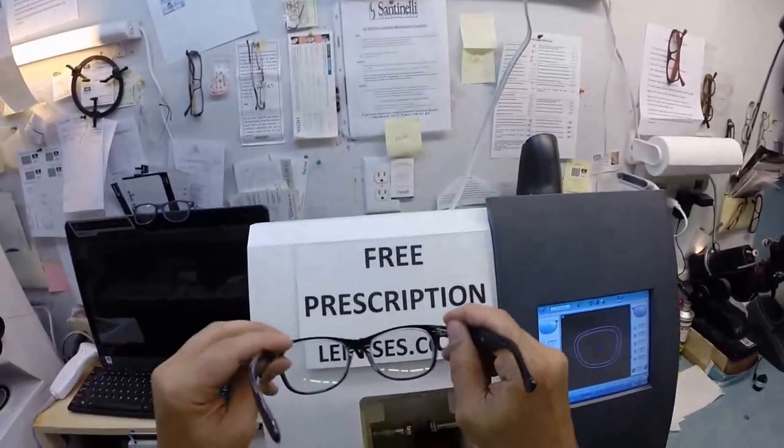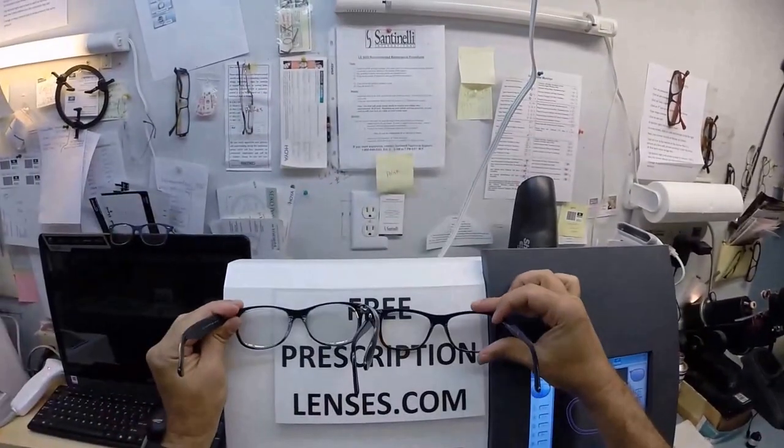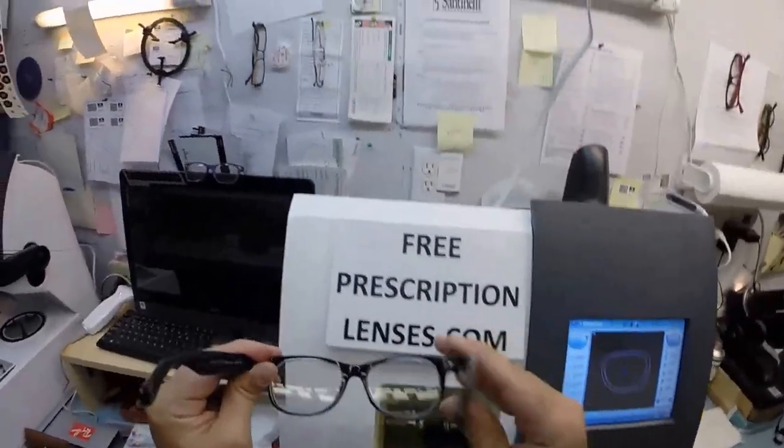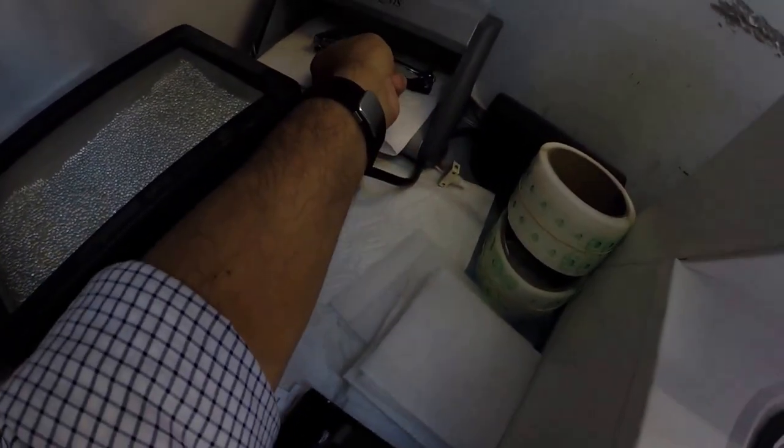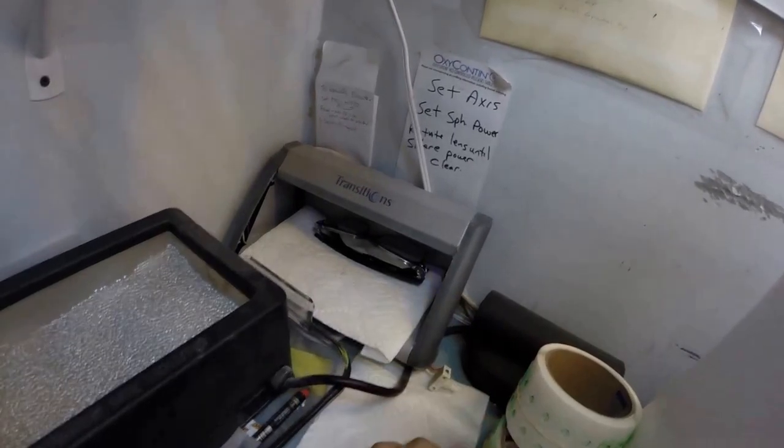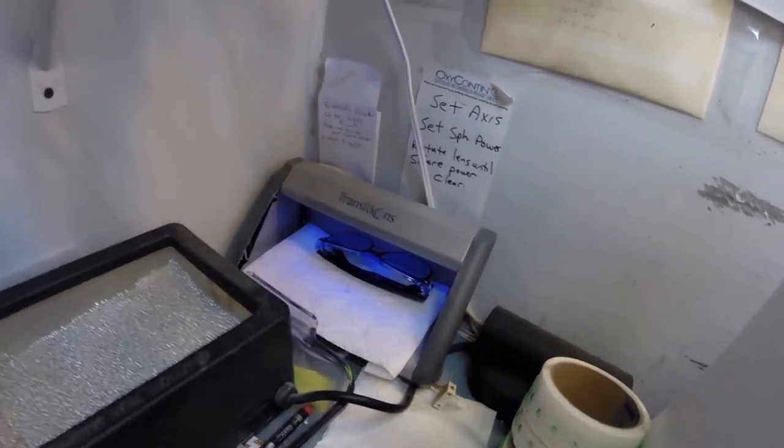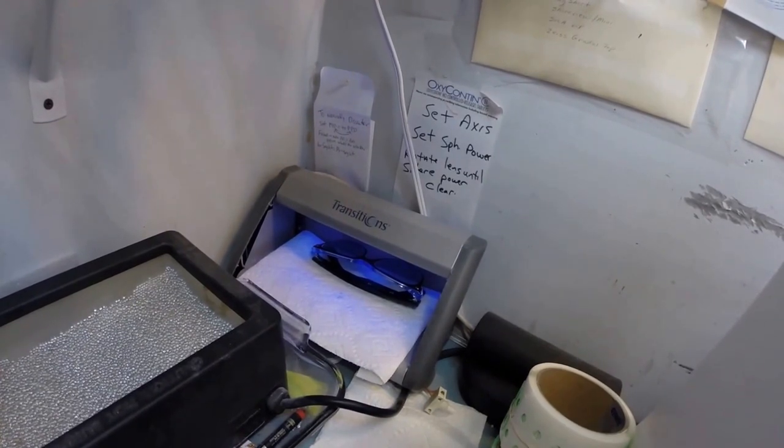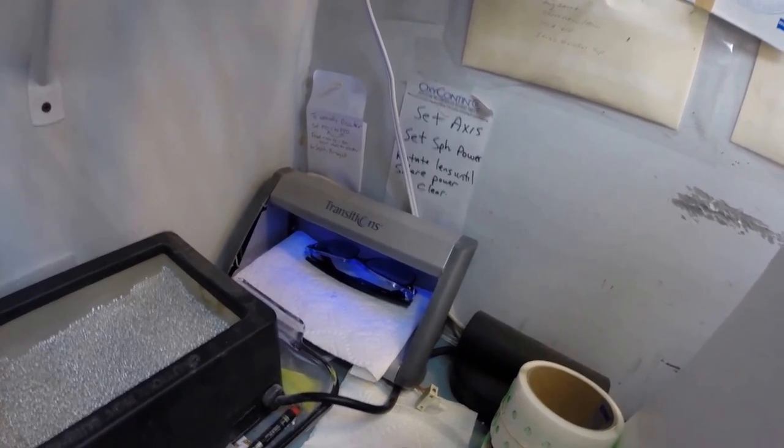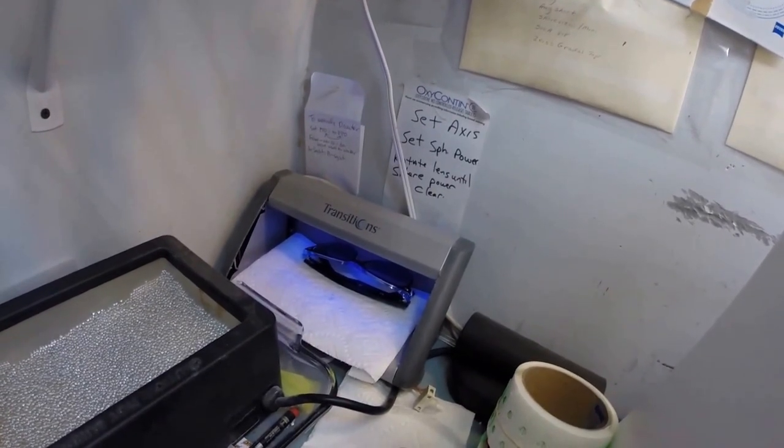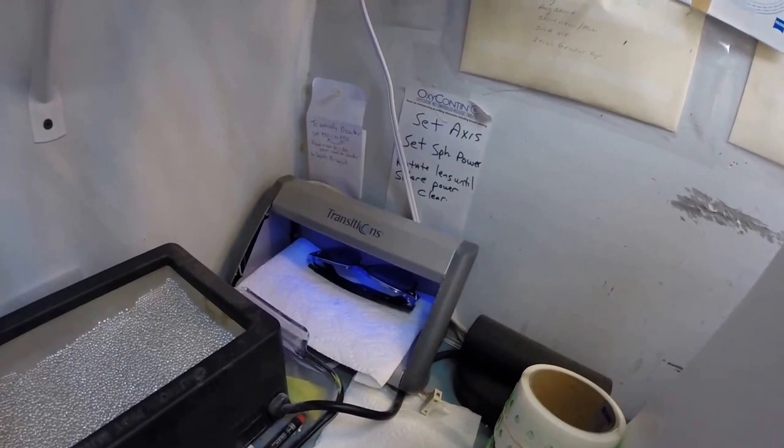This is what your lenses look like clear versus mine. Again, just a little bit of tint while indoors. Now let's go ahead and activate them. I'm gonna show you what they look like when they've been darkened. I've got my little transitions box in the corner which just has a strong UV light on the inside. I'm gonna turn that on and expose them to a strong burst of UV light. As you can see it takes about 30 to 45 seconds for transition lenses to darken, about 45 seconds to a minute to a minute 15 to return back to virtually clear when you go back indoors.